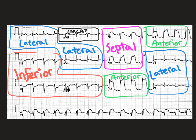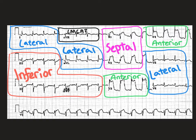We have overlaid the regions of the heart on the 12-lead we were just looking at. We've decided that we have elevation in V1 and V2, meaning we are having some type of septal involvement. It makes sense because where V1 and V2 sit on either side of the sternum at the 4th intercostal space, they are looking directly at the septum of our heart. The same is true for V3 and V4 — they are looking directly at the anterior side of our heart.